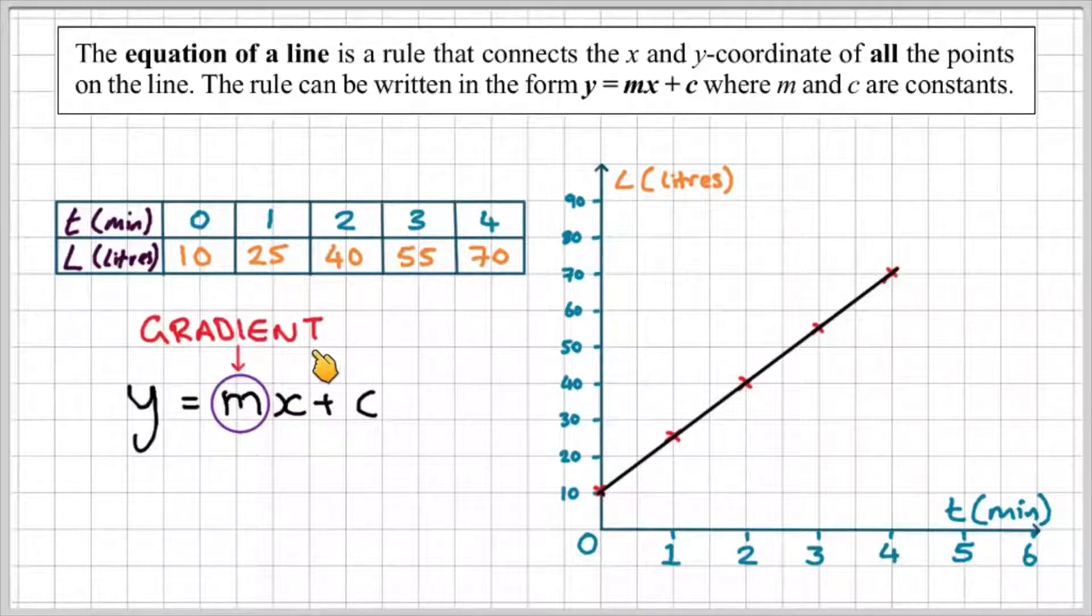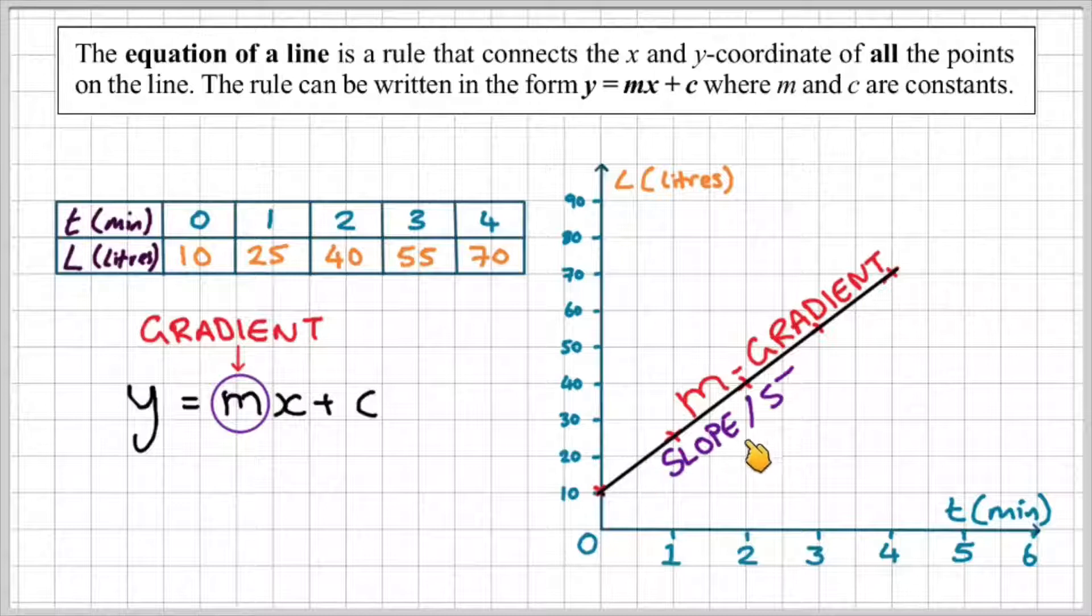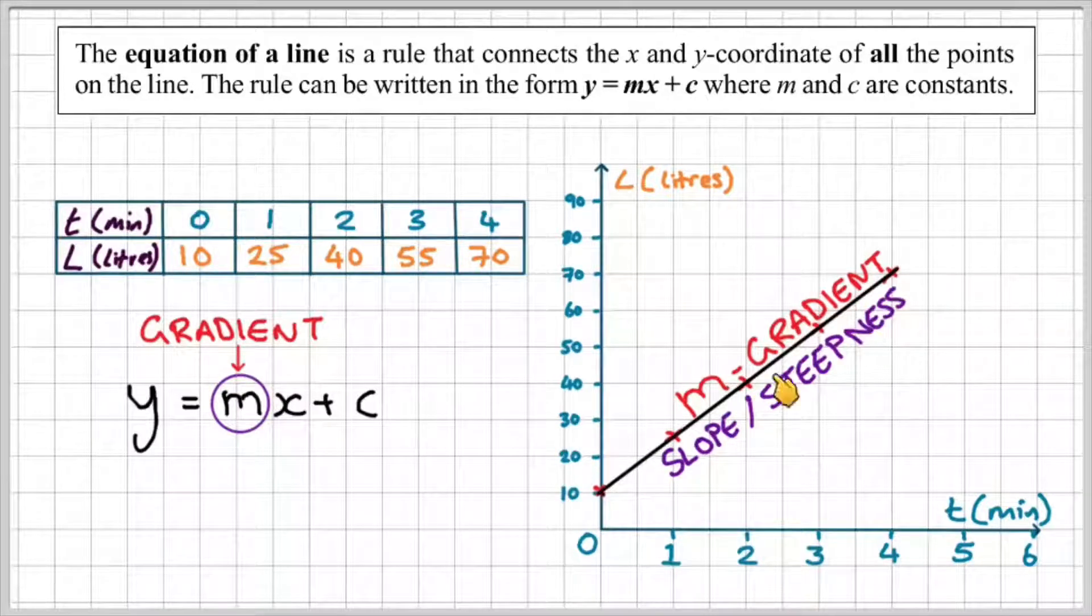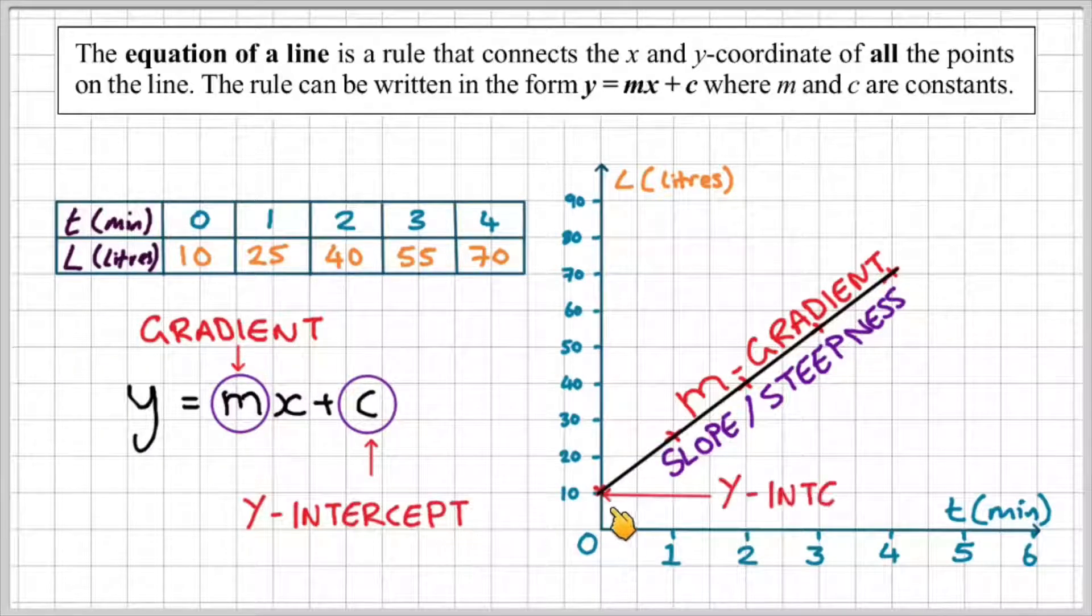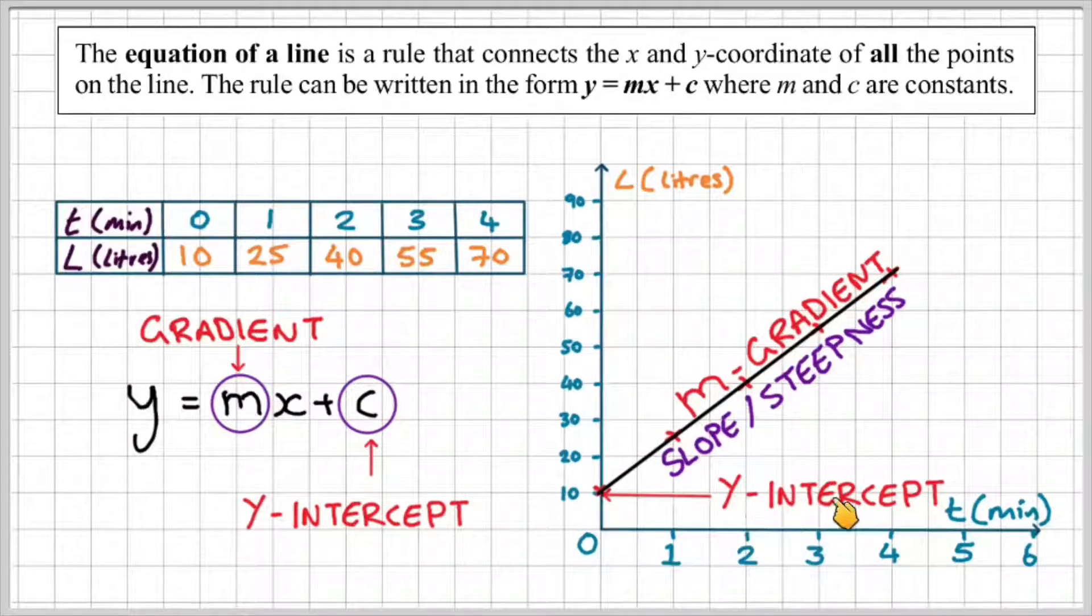m is the gradient. So on my straight line then, that represents the slope or the steepness of the line. And c refers to the y-intercept, the point where it cuts through the y-axis.